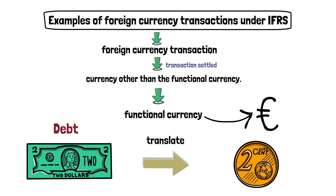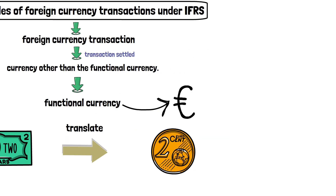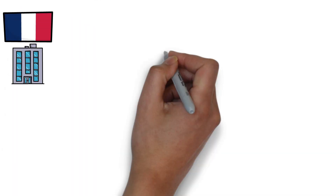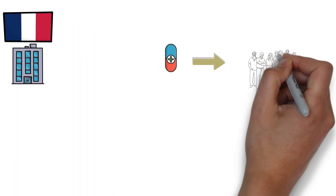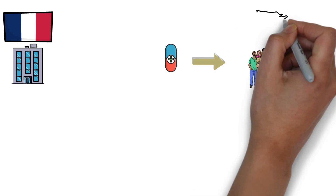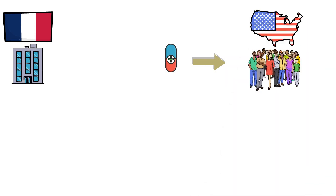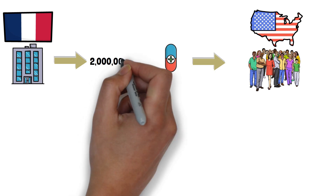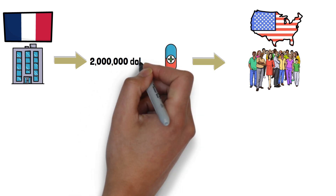To understand the concept of a foreign currency transaction, let's look at these examples. A pharmaceutical company located in France sells medicines to customers in the United States. In January of year 1, the entity sold inventory for 2 million dollars.